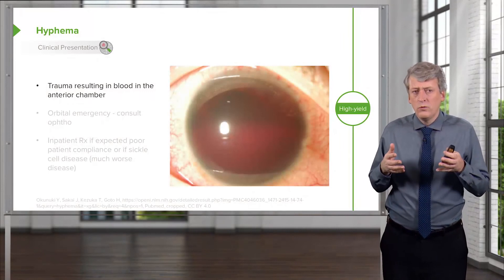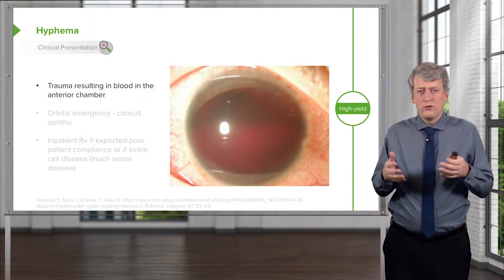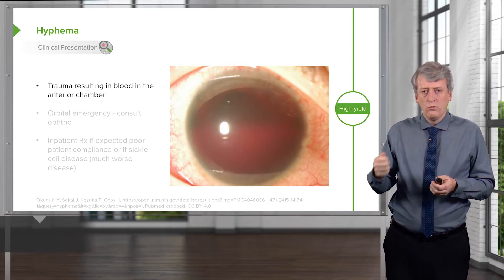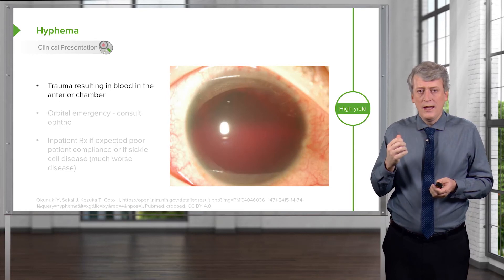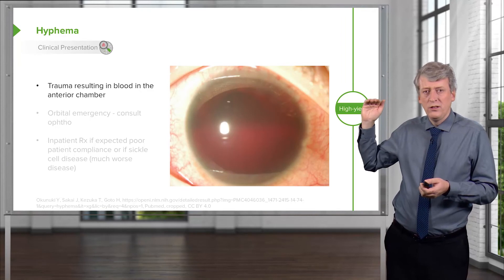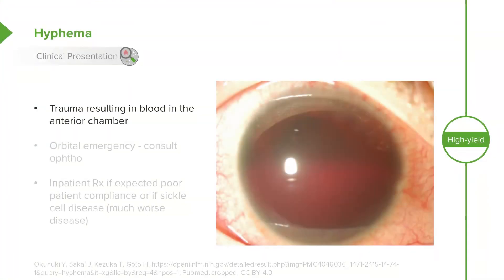A hyphema is an acute bleed as a result of direct blunt force trauma to the eye in the anterior chamber. What you can see if you look carefully is blood layered out about halfway up the eye, right in front of the iris. This is basically a result of direct trauma — say a baseball to the eye. This is an orbital emergency and we generally want to call ophthalmology to come and evaluate.